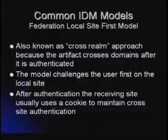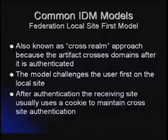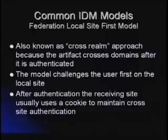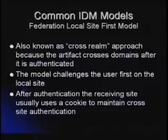Federation — this is where we get into the interesting high-end models. There are two models: a local site-first model and a destination site-first model. The local site-first is known as a cross-realm approach. In federation they talk about an 'artifact' — basically a piece of information passed between systems that can be opened to identify the person in a common format that they share. In the cross-realm model, the artifact crosses the domains after authentication, and the model challenges the user first on the local site then asserts to the destination site.